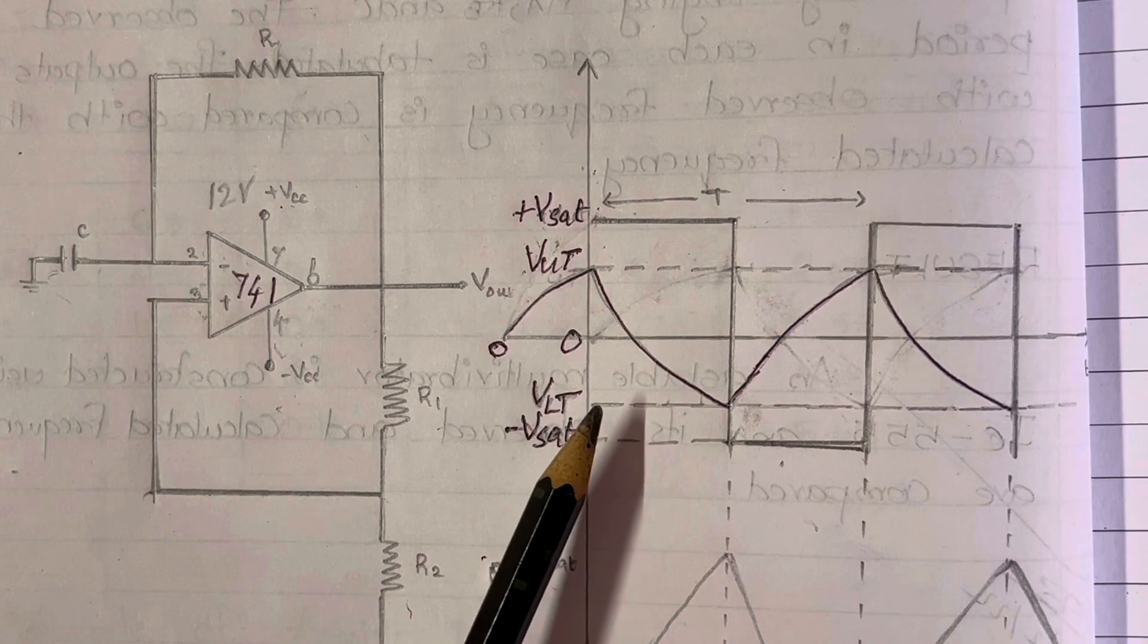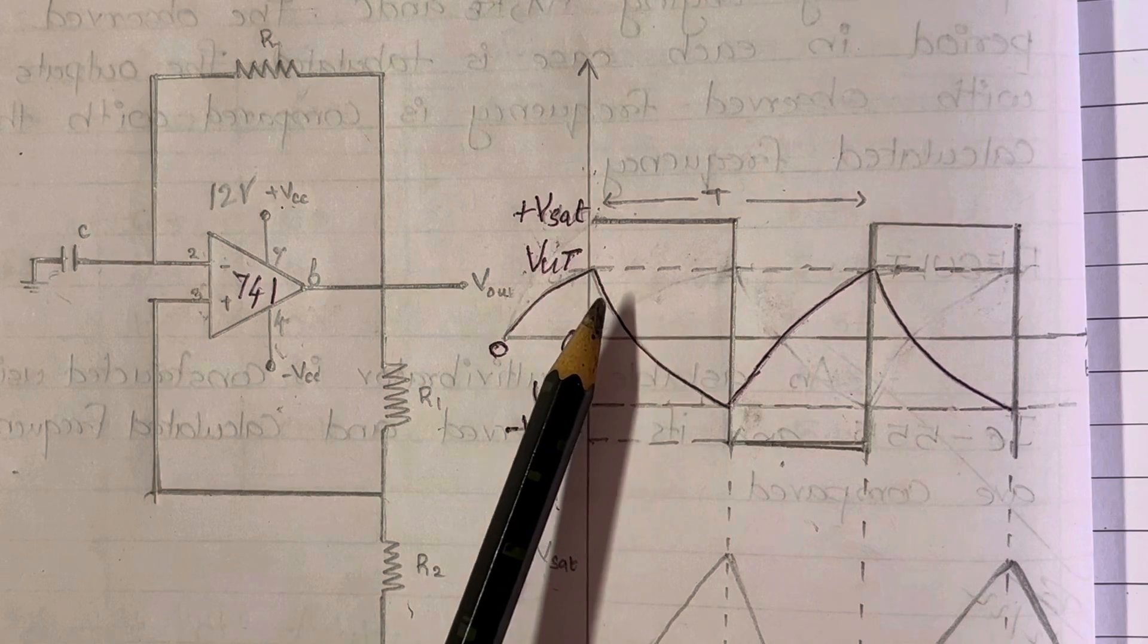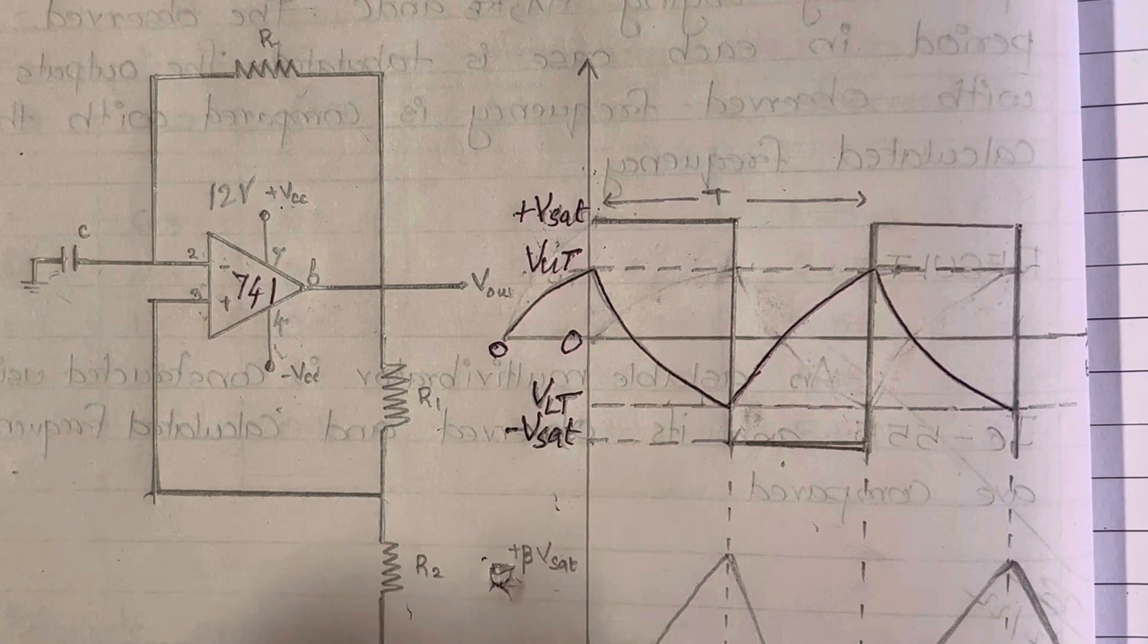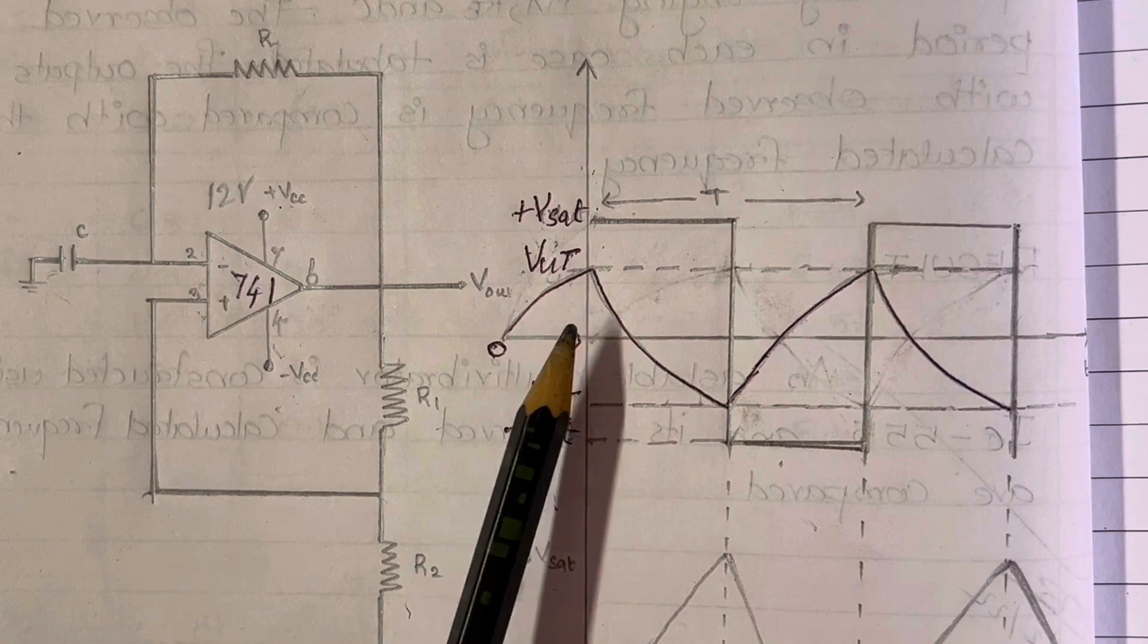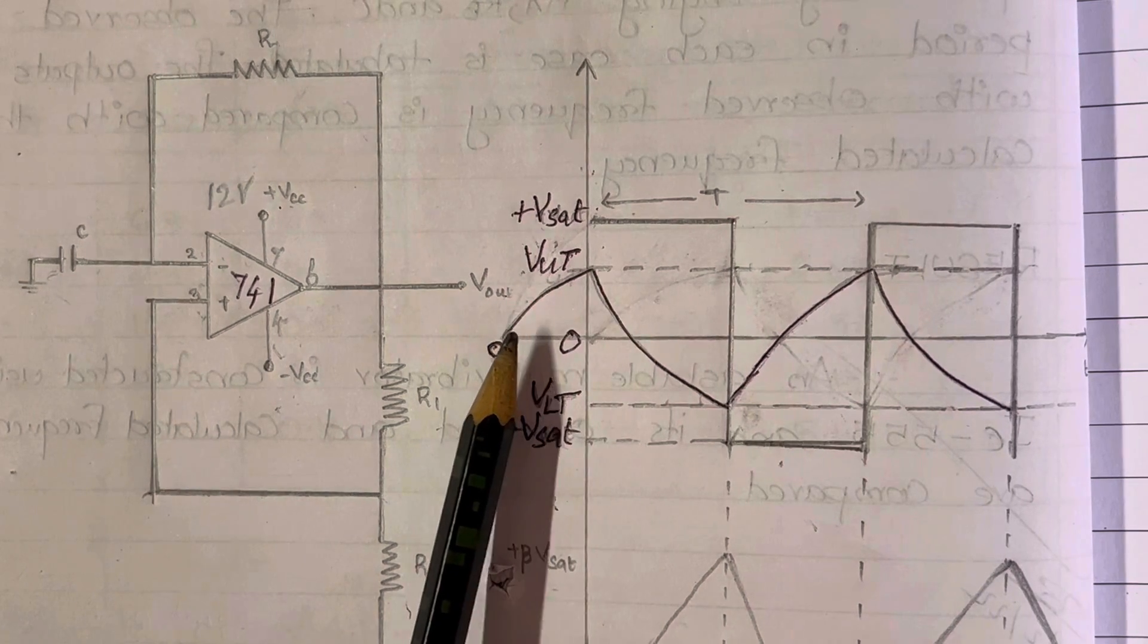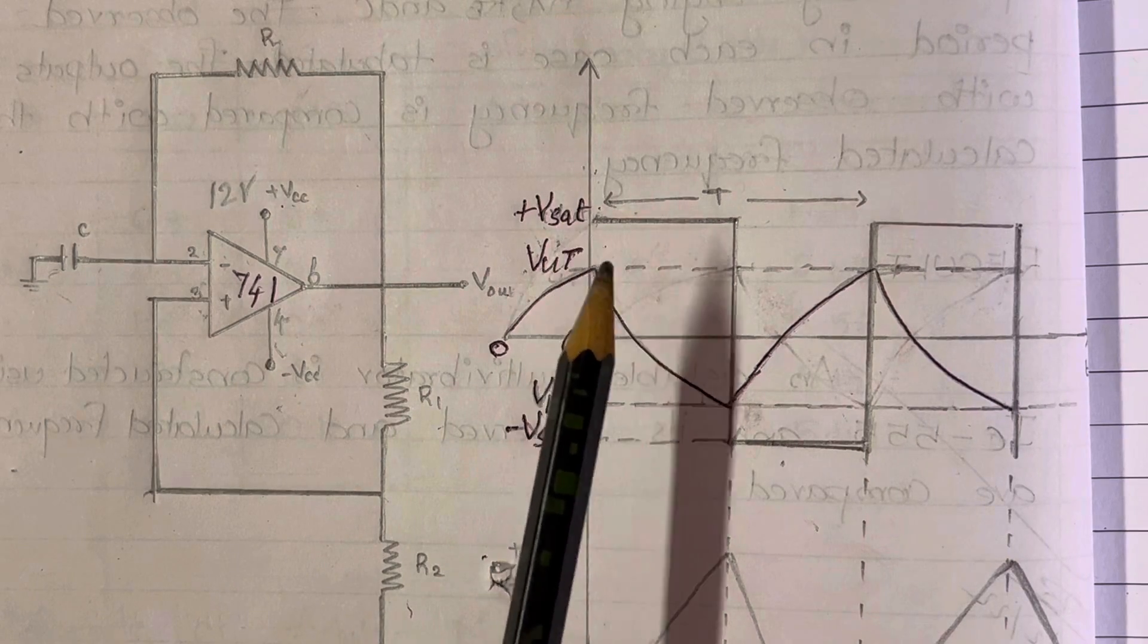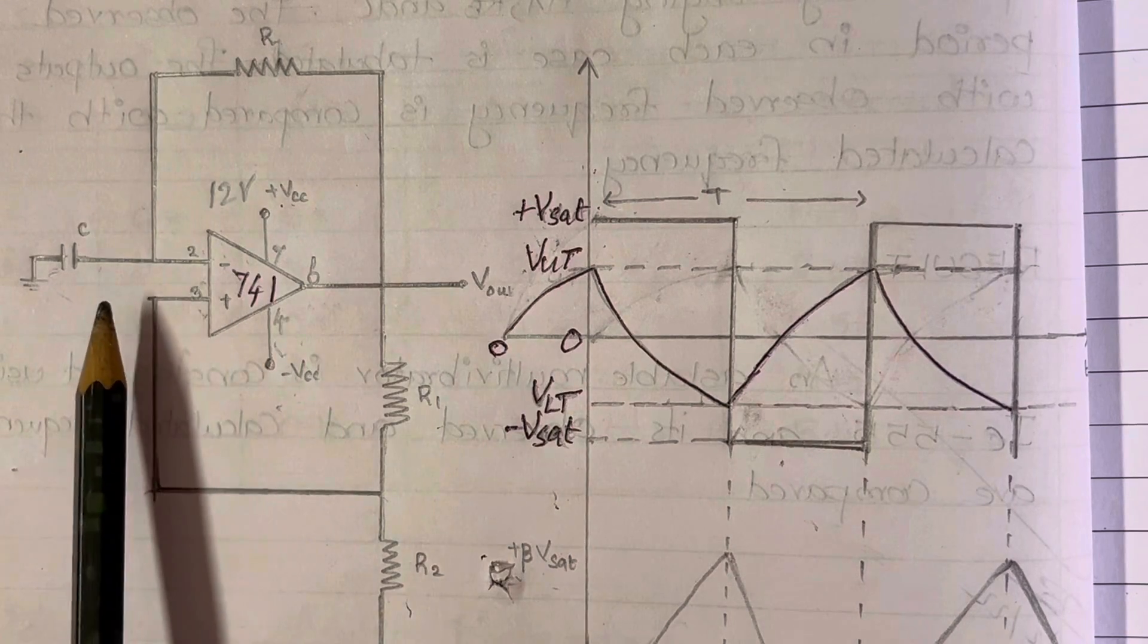Here first of all we have to know what is meant by V saturation. V saturation is the output of op-amp which would be 1 or 1.5 volt less than the supply voltage. Here the supply voltage is 12 volt and so it could be 10.5 or 11 volts. V upper limit is the feedback threshold voltage to which this capacitor can charge. So here on the application of the power supply, when it reaches the upper threshold voltage, the output reverses from plus V saturation to minus V saturation. That means the potential across the capacitor gets reversed.